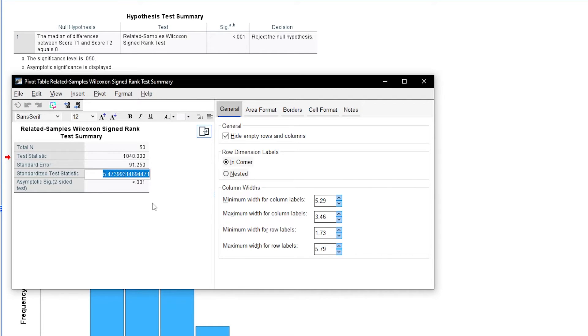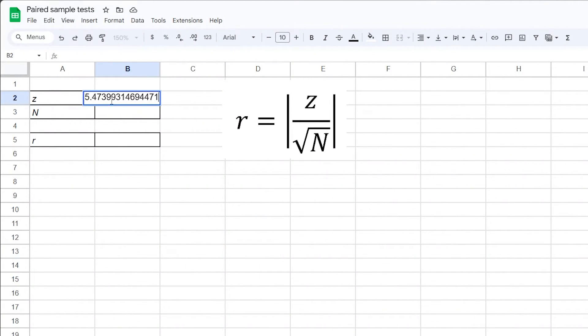If you want the calculation to be as exact as possible, I would recommend using Excel or Google Sheets and copy the standardized test statistic with all decimals available and do the calculation there. The resulting effect size for my example has a value of 0.774 rounded to 3 decimals.